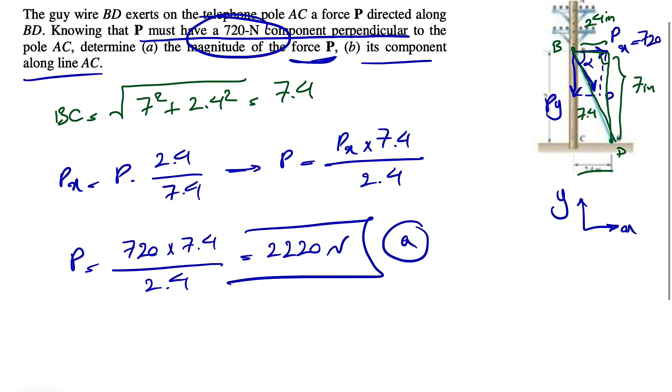And in part B, we need to find PY, which this time will be P sine of alpha or the opposite, which is 7 divided by the hypotenuse, 7.4. So we found our P, 2220 times 7 divided by 7.4.